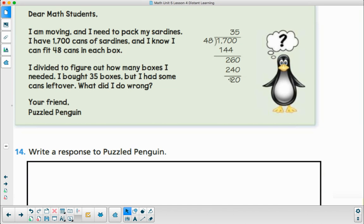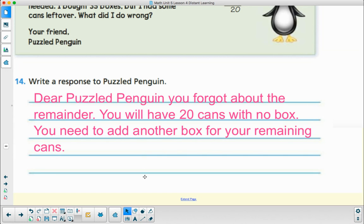Then I realized, wait a minute. He has 35 groups of 48, but he has 20 remaining. That's 20 remaining of the 1,700 cans of sardines. The remainder is 20 cans. He needs one more box to put in those 20 cans. He needs 36 boxes. So I told him, dear Puzzle Penguin, you forgot about the remainder. You will have 20 cans with no box. You need to add another box for your remaining cans.